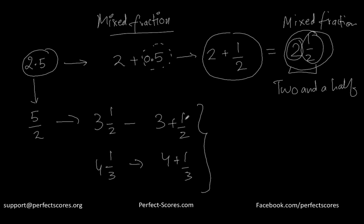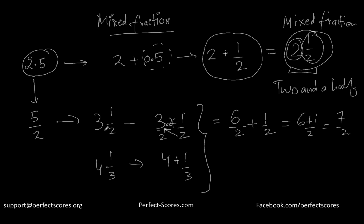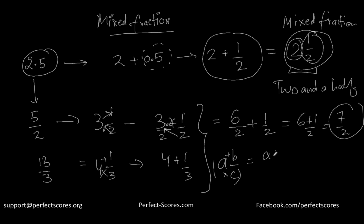To convert a mixed fraction, you don't have to do it the long way every time. For 3 plus 1 by 2, you make it 6 by 2 plus 1 by 2 to get 7 by 2. The shortcut is: 3 times 2 is 6, plus 1 is 7, giving 7 over 2. Similarly, 4 and 1 third becomes 4 times 3 = 12, plus 1 = 13, giving 13 over 3. So for a mixed fraction a and b over c, you do a times c plus b to get the numerator.